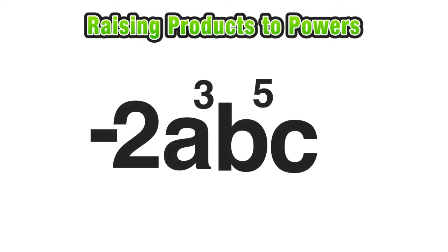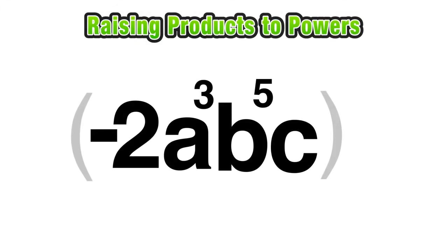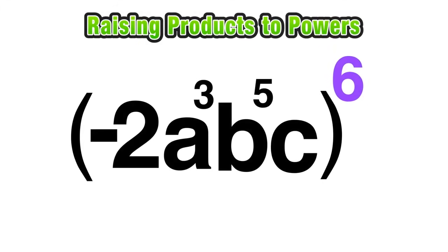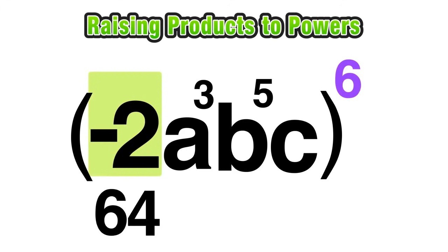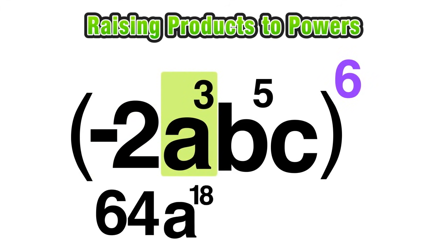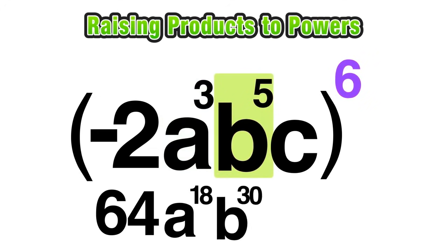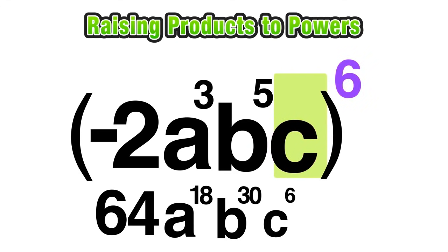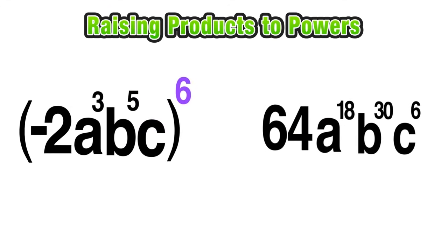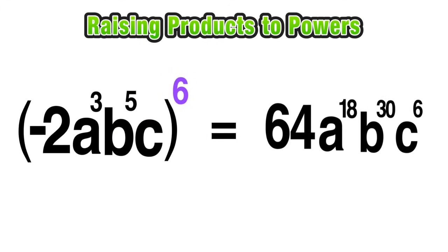Let's try one more example. We have the product (-2a³b⁵c) raised to the sixth power. Going piece by piece: negative 2 to the sixth is positive 64; a to the third to the sixth power is a to the 18th, since 3 times 6 is 18; b to the fifth to the sixth power gives b to the 30th, since 5 times 6 is 30; and c to the first power to the sixth power is simply c to the sixth. These two expressions are equivalent and equal to each other.